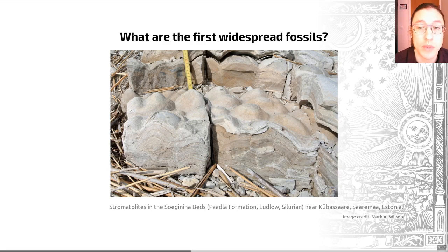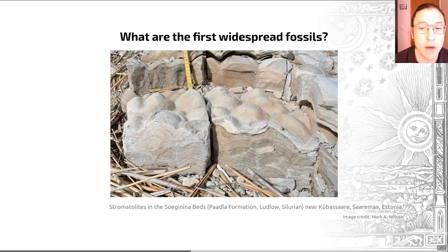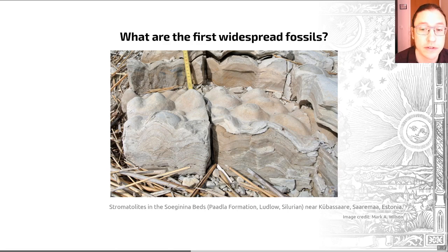What we can say is that many stromatolites are caused when cyanobacteria trap layers of calcium carbonate as they grow upwards to get towards the light to allow photosynthesis.